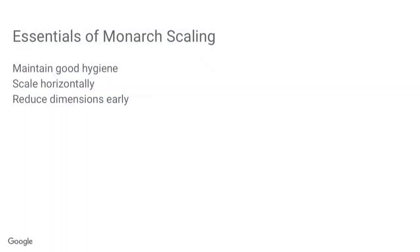Towards the last half of the talk, George covers the essentials for scaling the system, which come down to three themes: maintaining good hygiene for your backends — concurrency and that sort of thing; scaling horizontally, which is really the only practical way to scale this system; and reducing dimensionality early for the really largest users.